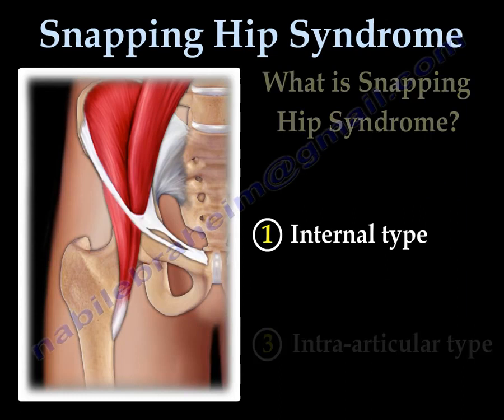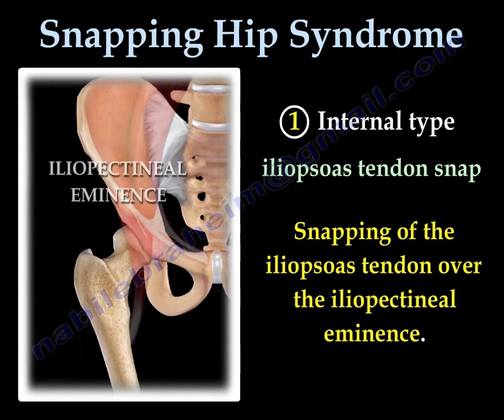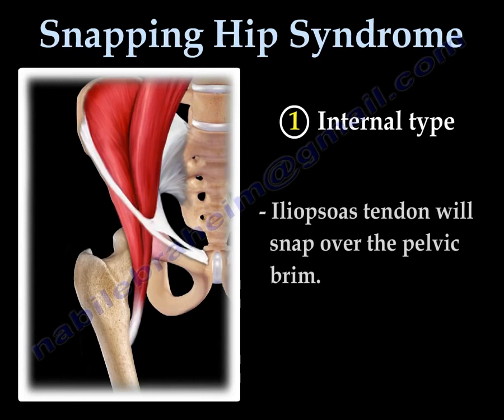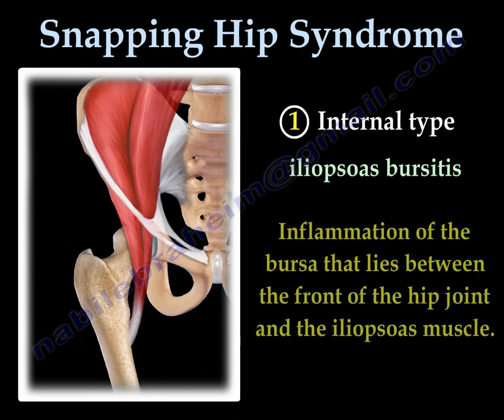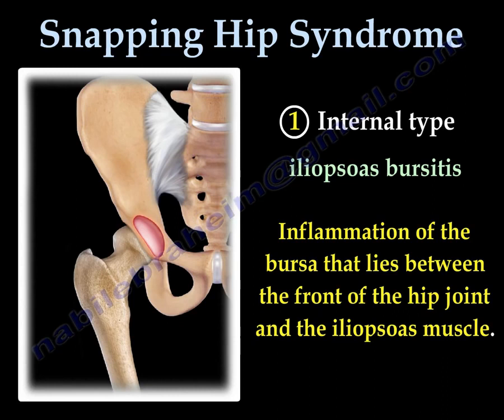Internal type refers to iliopsoas tendon snap. The snapping of the iliopsoas tendon occurs over the iliopectineal eminence — the iliopsoas tendon will snap over the brim of the pelvis. It is caused by inflammation of the bursa that lies between the front of the hip joint and the iliopsoas muscle or tendon.